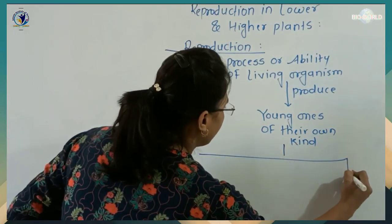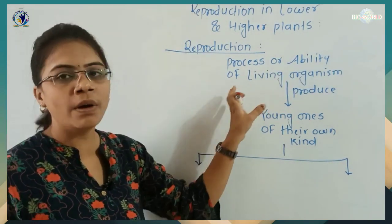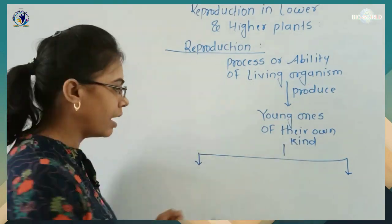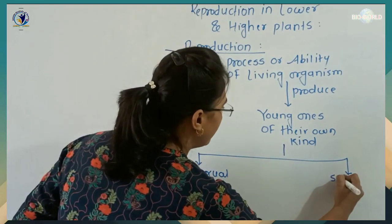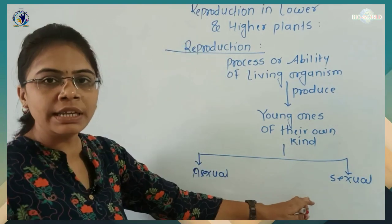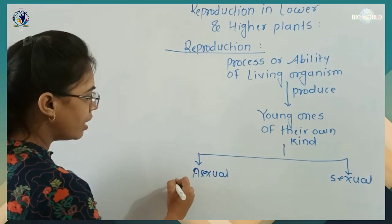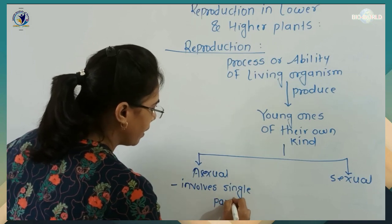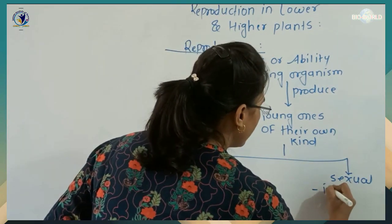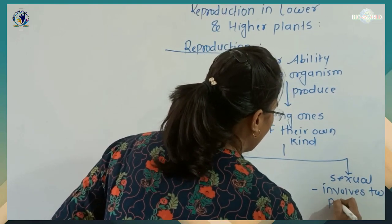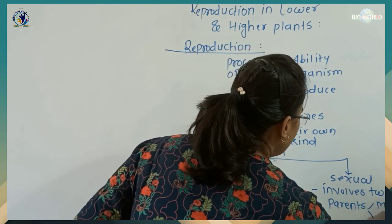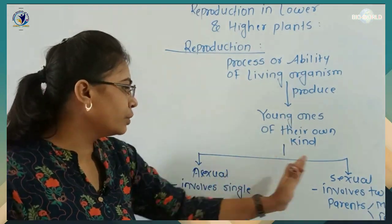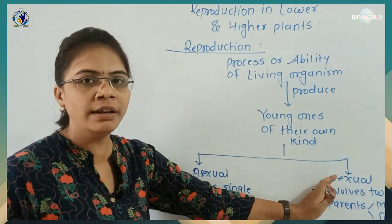Reproduction is mainly categorized into two types, because every living organism's mode of reproduction is different, but we have mainly divided it into two categories: asexual reproduction and sexual reproduction. The basic difference is that asexual reproduction involves only a single parent, while sexual reproduction involves two parents — one compulsory male and another compulsory female.